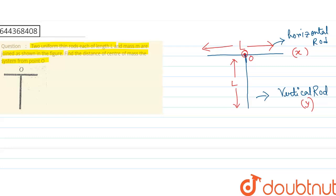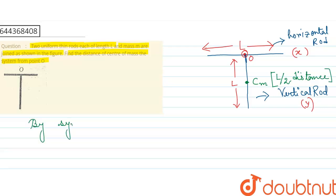For a uniform rod, the center of mass is placed at the midpoint by symmetry. So for the vertical rod, the center of mass is placed at the midpoint, which is at L by 2 distance from the origin.